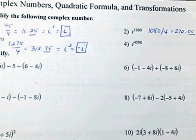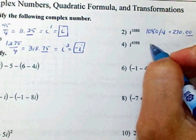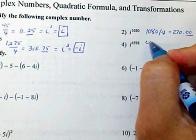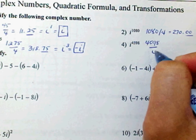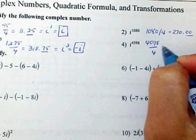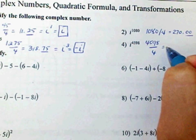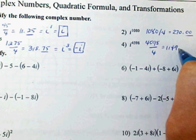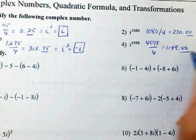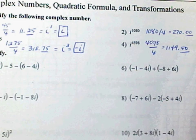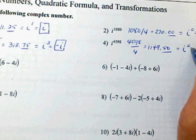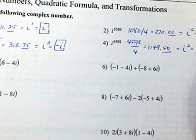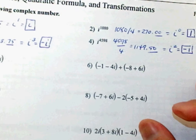On number 4, you're going to take 4598, divide that by 4 as well, and that is equal to 1149.50. The 0.5 is the same thing as i squared, and i squared is the same thing as negative 1.